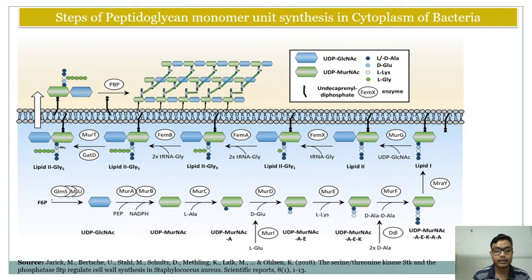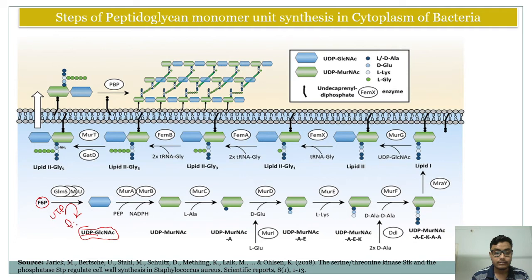First, fructose-6-phosphate is converted to UDP-N-acetylglucosamine. UTP comes in and one inorganic phosphate is released; UDP binds with fructose-6-phosphate to form UDP-N-acetylglucosamine. After that, phosphoenolpyruvate and NADPH, along with MurA and MurB enzymes, transform UDP-N-acetylglucosamine into UDP-N-acetylmuramic acid.